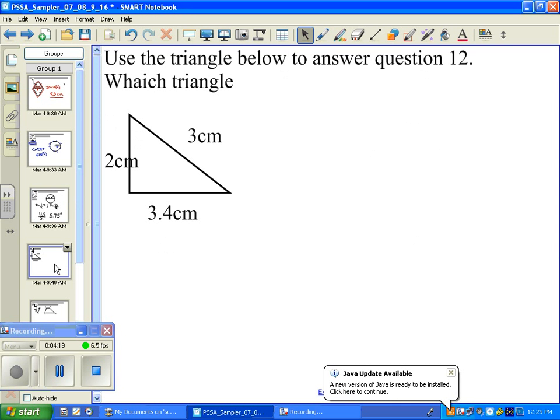Which triangle below, using the triangle below for question 12, which triangle is similar to this one that they have given you? And here, so we're talking about similarity in triangles. The way something is similar is that it has the same ratio. And what's ratio?